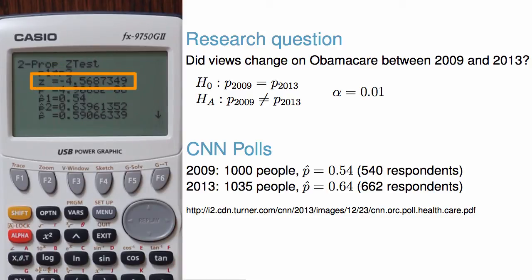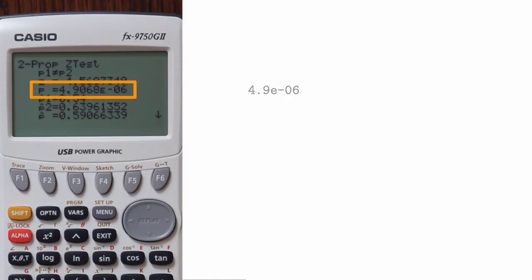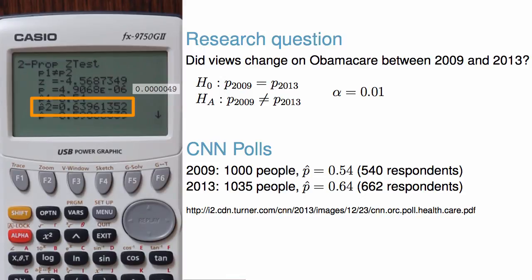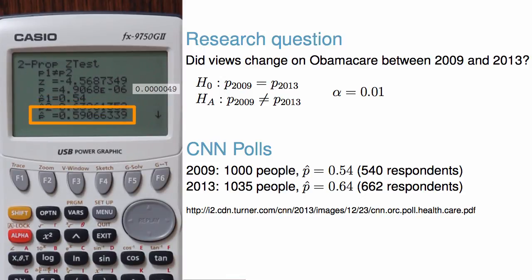The Z test statistic is negative 4.57. The p-value is 4.9e-06, written in scientific notation. We can write the long form by writing 4.9 and then moving the decimal six places to the left, since it is e-6. The sample proportions are 0.54 and 0.64, and the pooled proportion is 0.59.